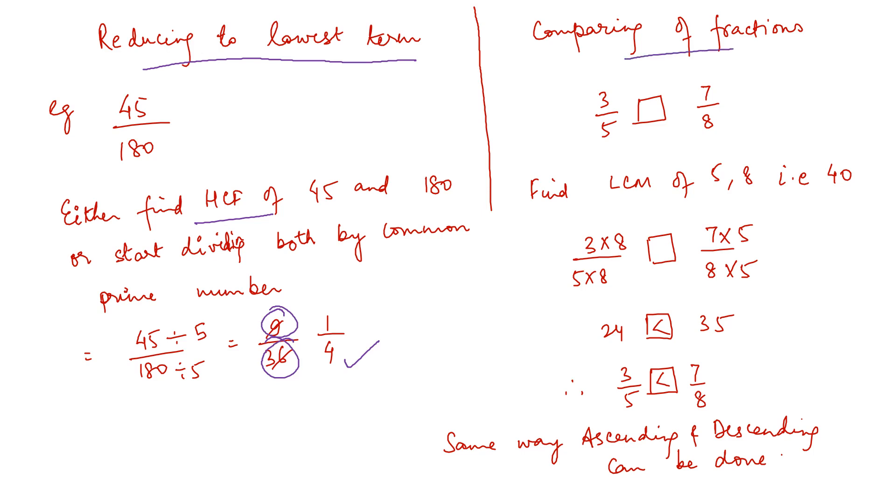Comparing of fractions. Comparing of fractions again when they were unlike you have to find the LCM. Now LCM of 5 and 8 is 40. Again change your fractions to new fractions whose denominators are 40. So then once denominators are 40, it is actually 24 by 40 and 35 by 40. Now you can compare the numerators. 35 is greater. So then 7 by 8 is greater.